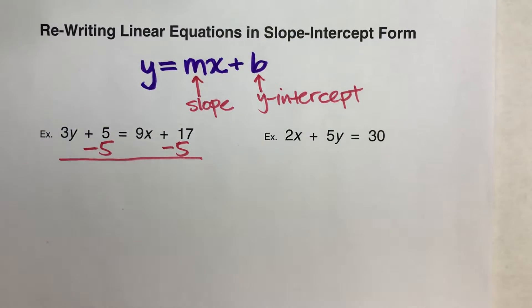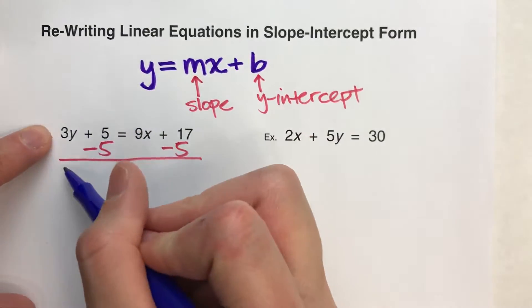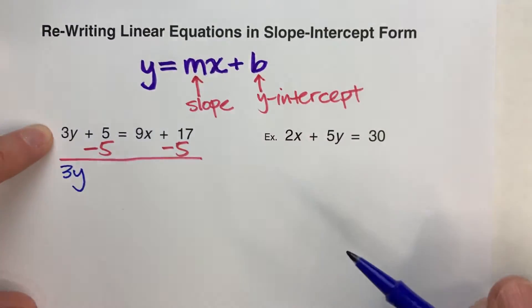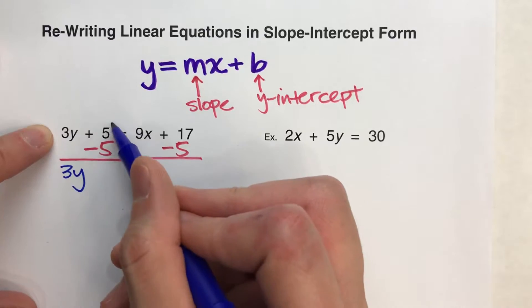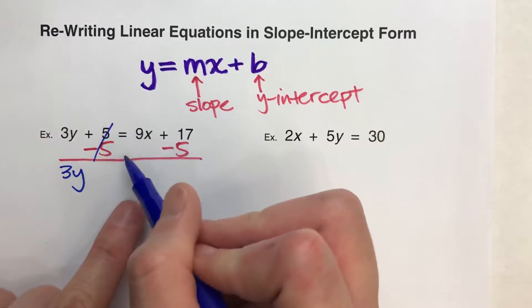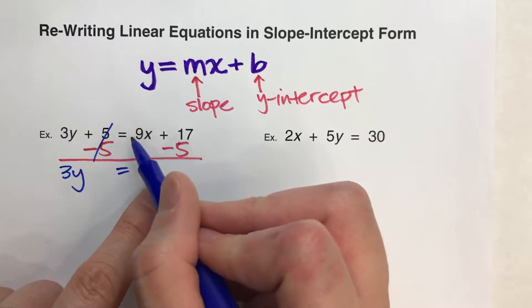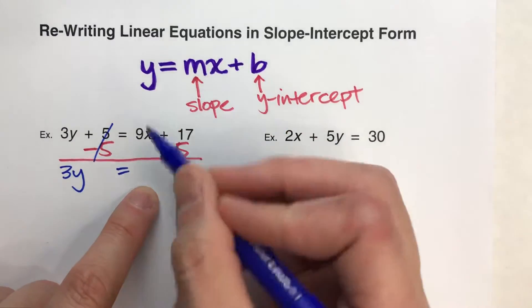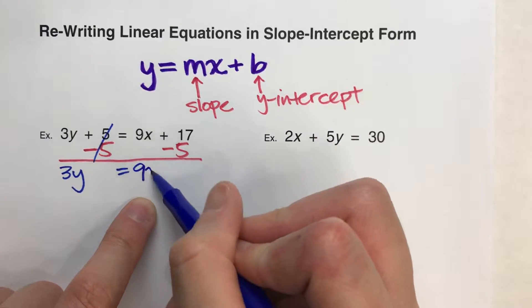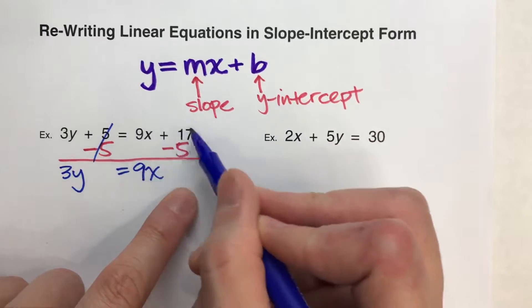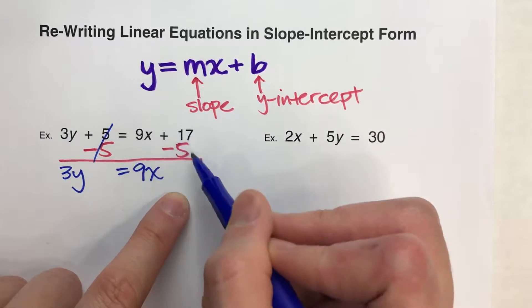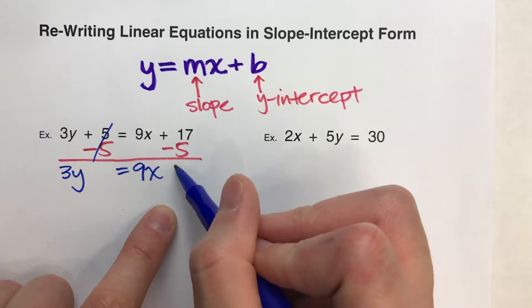When I do that, the 3y hasn't changed, so it just drops down. Plus 5 and negative 5 undo each other. On the other side, we've got 9x plus 17, but we haven't done anything with the 9x, so it drops down. But we did do something with the 17. 17 take away 5 leaves us with 12.